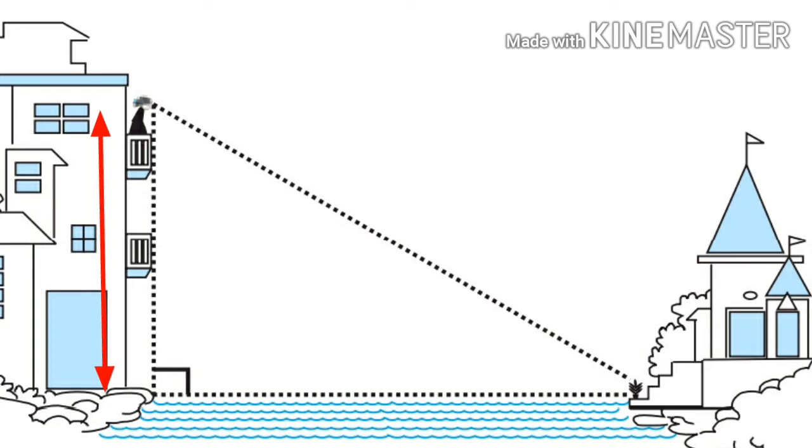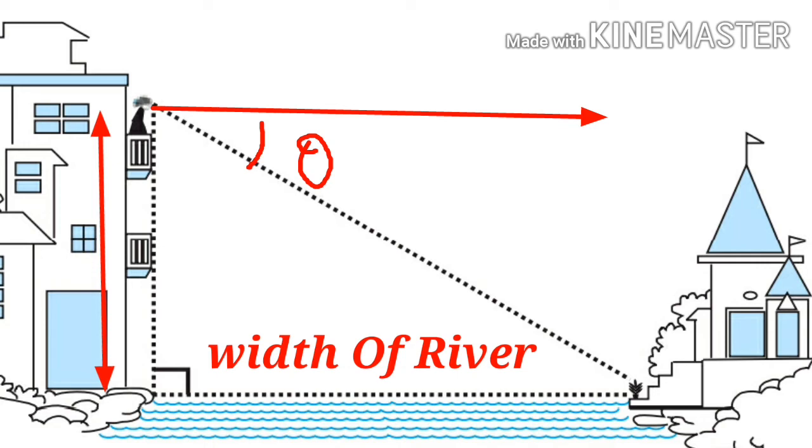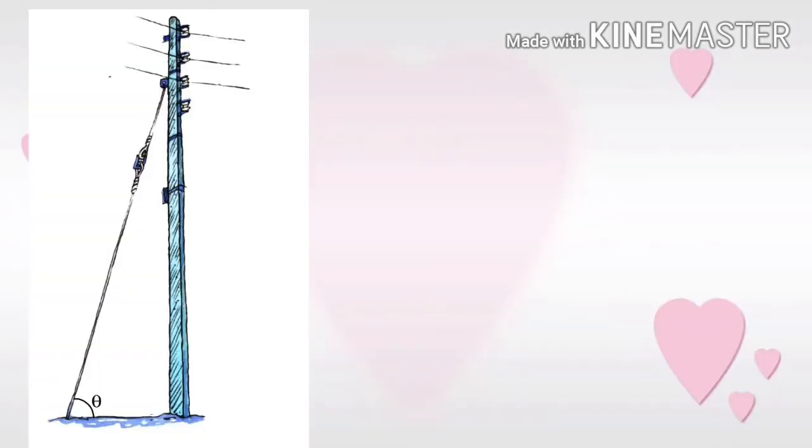In a two-story building, a girl is seeing a flower outside the river. If you know the angle and the height of the building, we can find the width of the river using trigonometry.